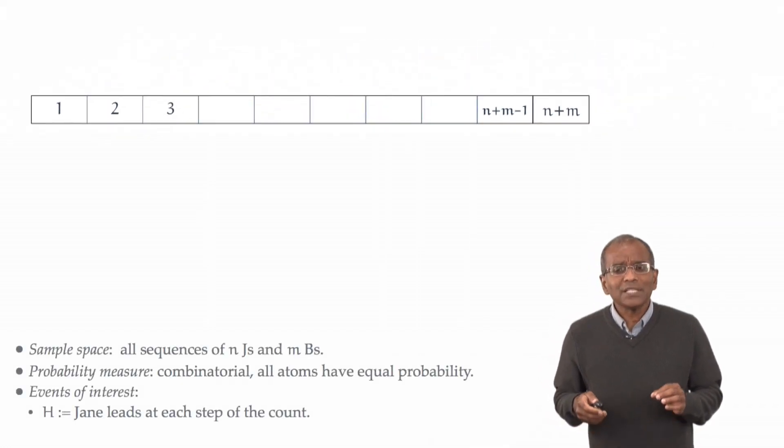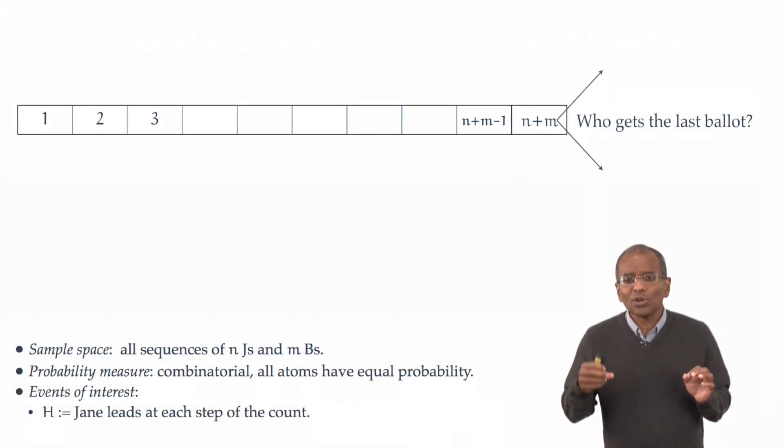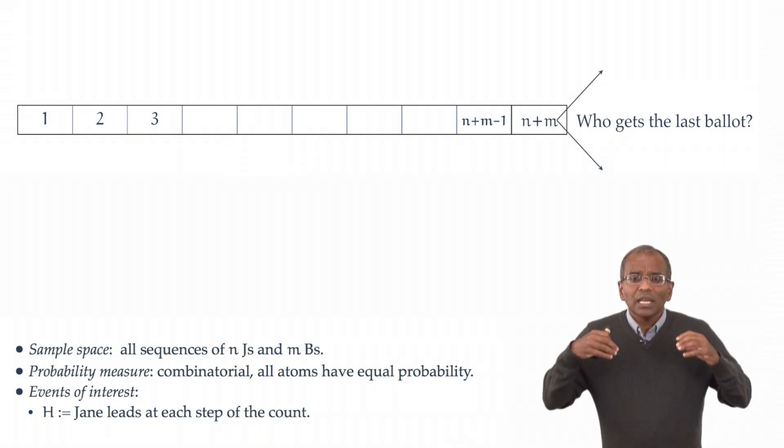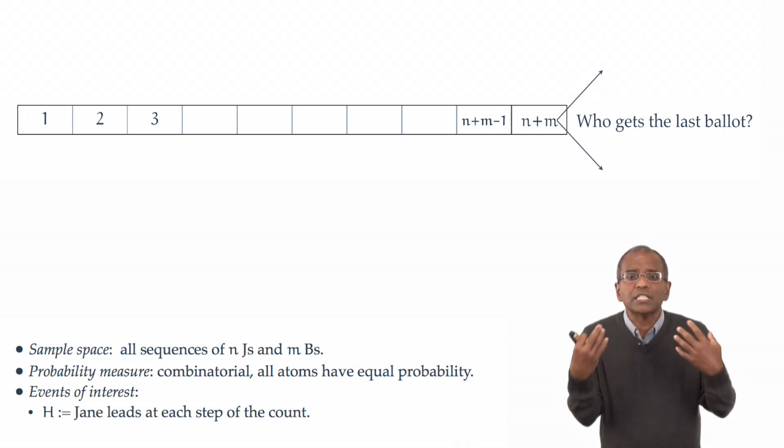A little introspection will tell you that the first step is not likely to be profitable because if the event H is to occur, if Jane is to lead at every step of the count, then the very first ballot must indeed go to Jane.